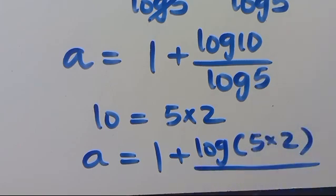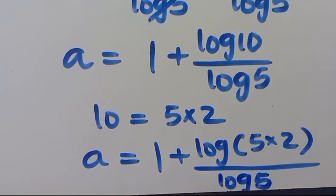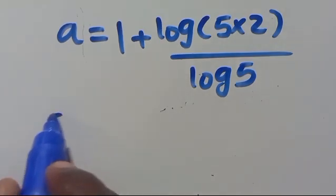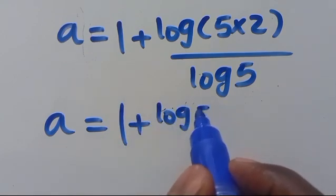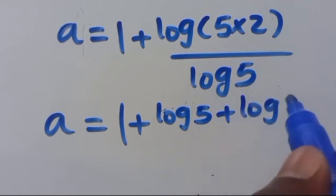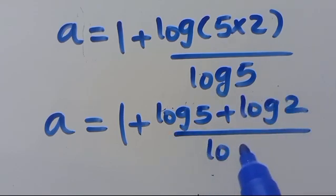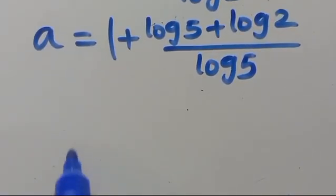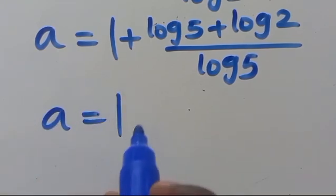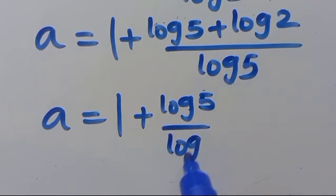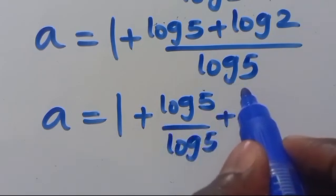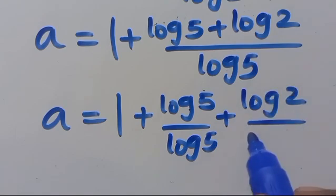We can express 10 as 5 times 2, so we have 1 plus log(5 times 2) over log 5. Expanding gives 1 plus (log 5 plus log 2) over log 5, which splits into 1 plus log 5 over log 5 plus log 2 over log 5, giving a equals 1 plus 1 plus log 2 over log 5.